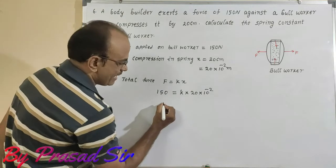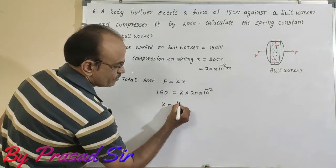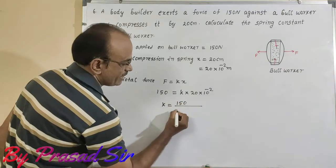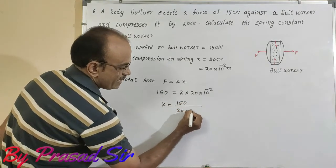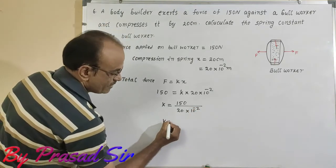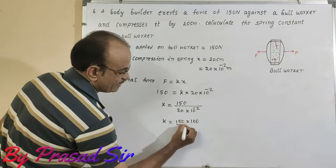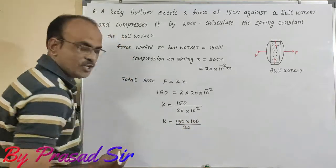I want to calculate the value of k, that is spring constant. k is equal to 150 divided by 20 into 10 to the power of minus 2. Here k is equal to 150 into 100 divided by 20.